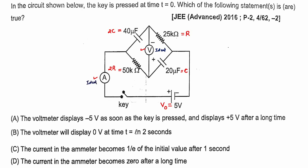When we say ideal, it means the voltmeter's resistance is considered to be very very high — around a few mega ohms — relative to the resistors of 25 and 50 kilo ohms in the circuit. An ideal ammeter offers almost zero resistance, so we don't have to worry about the resistance offered by the ammeter.